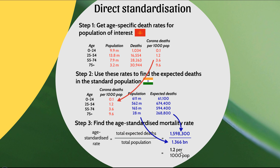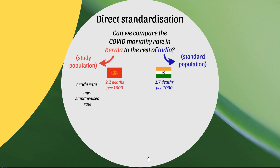What we've done is taken Kerala's death rate and applied it to the age distribution of the entire nation of India — asking: if Kerala had India's age distribution, what would its death rate be? It turns out to be 1.2 per 1,000 population. Comparing to India's crude rate of 1.7 per 1,000, we can see that the crude rates gave us a false impression. Kerala appeared to be doing worse, but age-standardized, it was actually doing better.